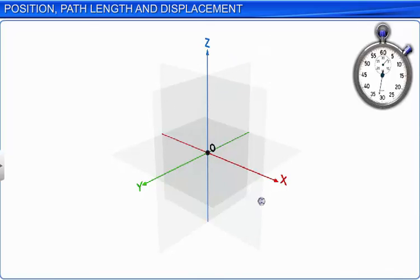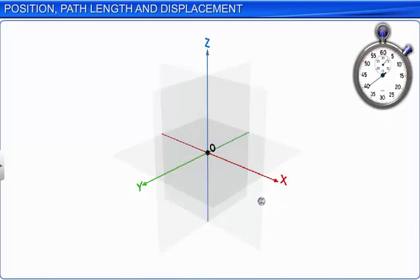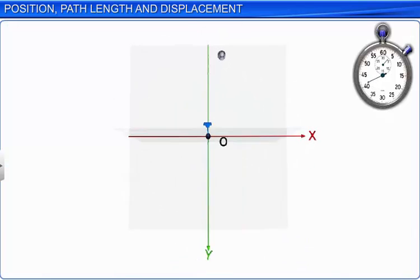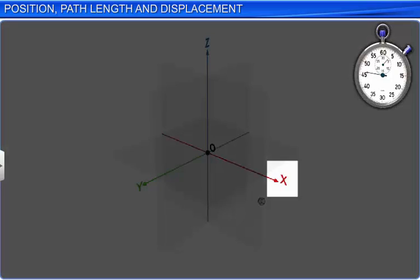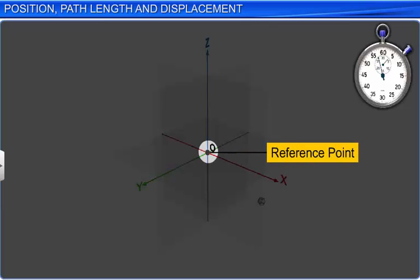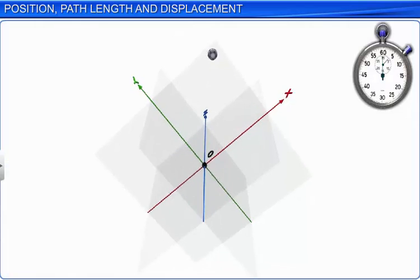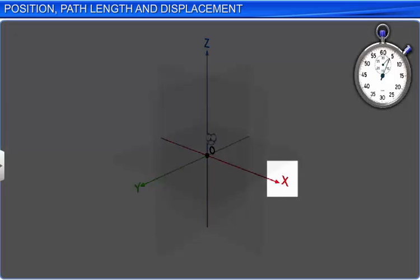To specify the position of a body, we use a reference point with respect to a set of axes. The set of axes consists of three mutually perpendicular lines labeled as the X, Y, and Z axis. The point of intersection of these three axes is called the origin, which is used as the reference point for the body. The X, Y, and Z coordinates of the body are given with respect to this rectangular coordinate system.